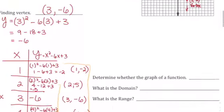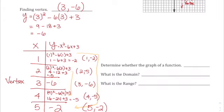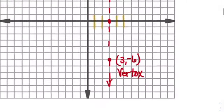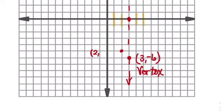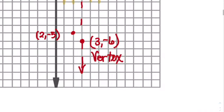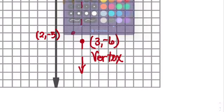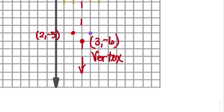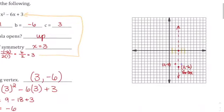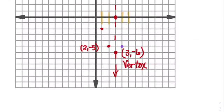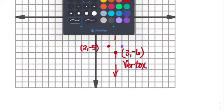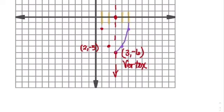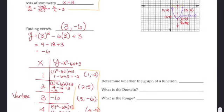Now plot all the points on the graph. The vertex is at (3, negative 6). The point (2, negative 5) goes here, and (4, negative 5) goes on the other side — they match because of the symmetry line cutting the parabola in half. Then (1, negative 2) and its mirror (5, negative 2) complete the shape. Connect the points to draw the parabola. That is how you complete a parabola problem.